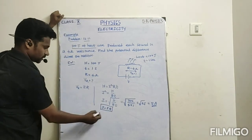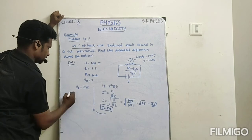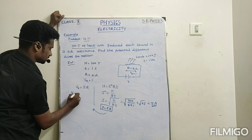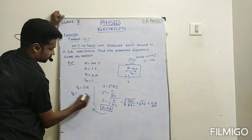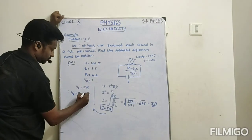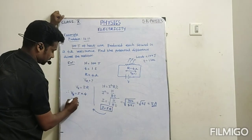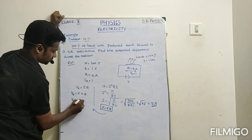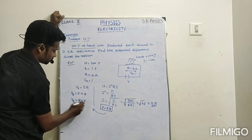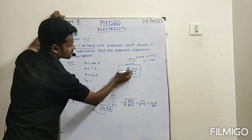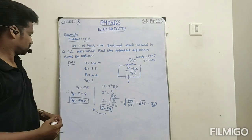Now we know I value. Therefore potential across resistor is equal to current value 5 ampere into the resistance 4 ohm. Potential across resistor is equal to 5 into 4, that is 20 volt.